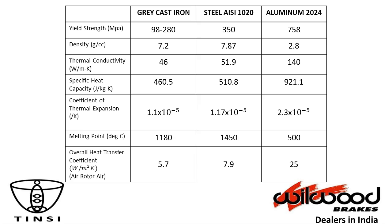Steel has a thermal conductivity of 51.9 W/m·K, and aluminium has the highest at 140 W/m·K. Aluminium also has the highest specific heat capacity, so it wins points here as well. However, the coefficient of thermal expansion of aluminium is twice that of grey cast iron and steel, which is not desirable — you don't want dimensional changes on your disc while braking. Therefore, grey cast iron and steel outperform aluminium on this property.